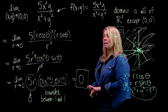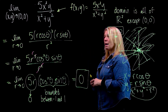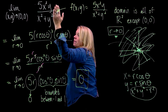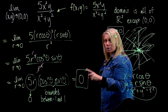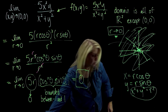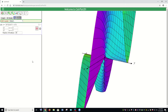As we discussed in the previous video, this doesn't mean there's a point at (0,0) with output zero — it means that when our (x,y) point is close to the origin, the outputs of this function are close to zero. Now let's look at this on the computer. I've graphed the function z = 5x²y / (x²+y²) on the default window.